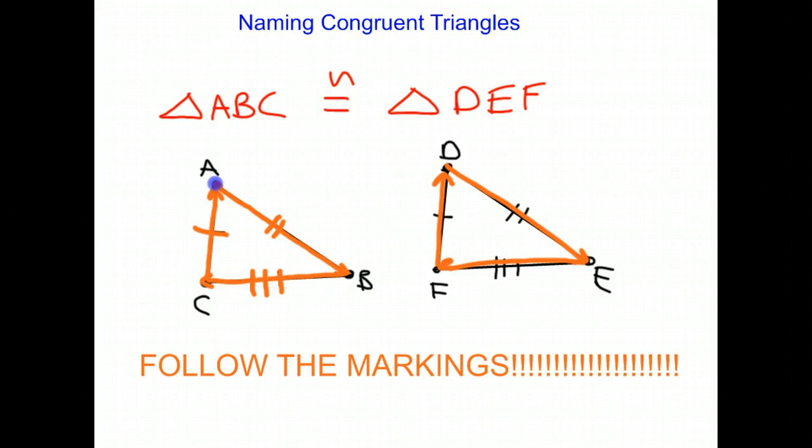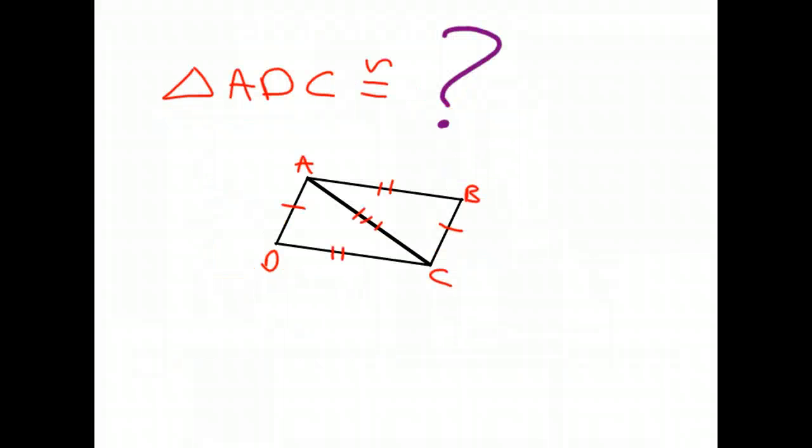So let's take a look at another example. Here we have another pair of congruent triangles, triangle ADC. And we need to figure out which triangle is congruent to triangle ADC.